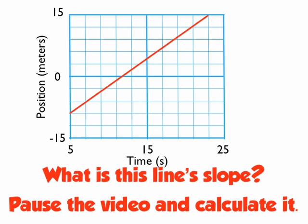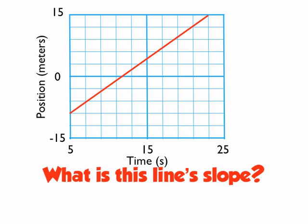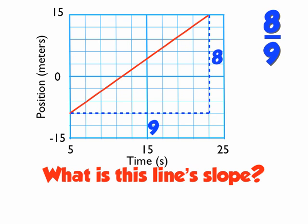At this point you should have paused the video and found the slope, so let's verify it. You're looking for the slope — you would have gone over and up, basically making a right triangle. It goes over 9 blocks and up 8 blocks. Slope is rise divided by run, so that will be 8 divided by 9, or 8 ninths.